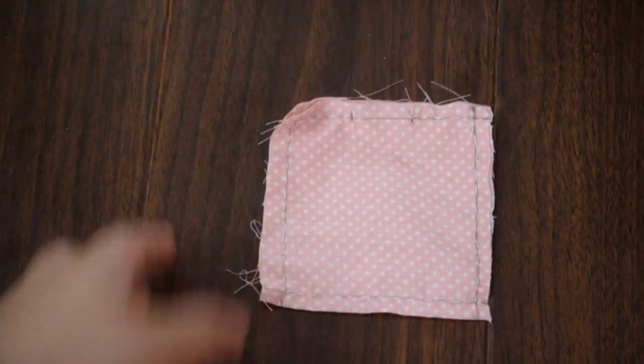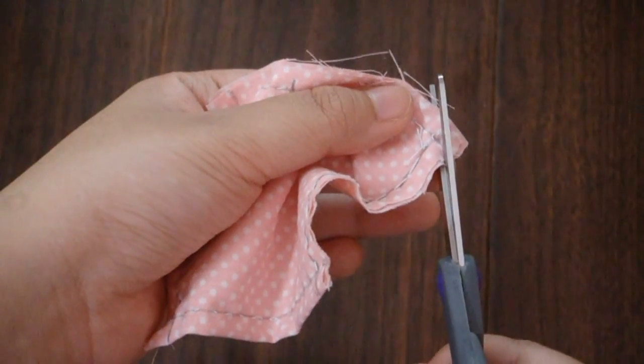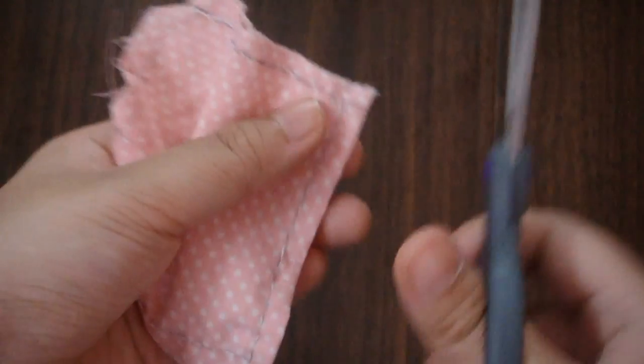This next step is really important. What you need to be doing is snipping the extra fabric at the corners so that your corners lie flat and are crisp.